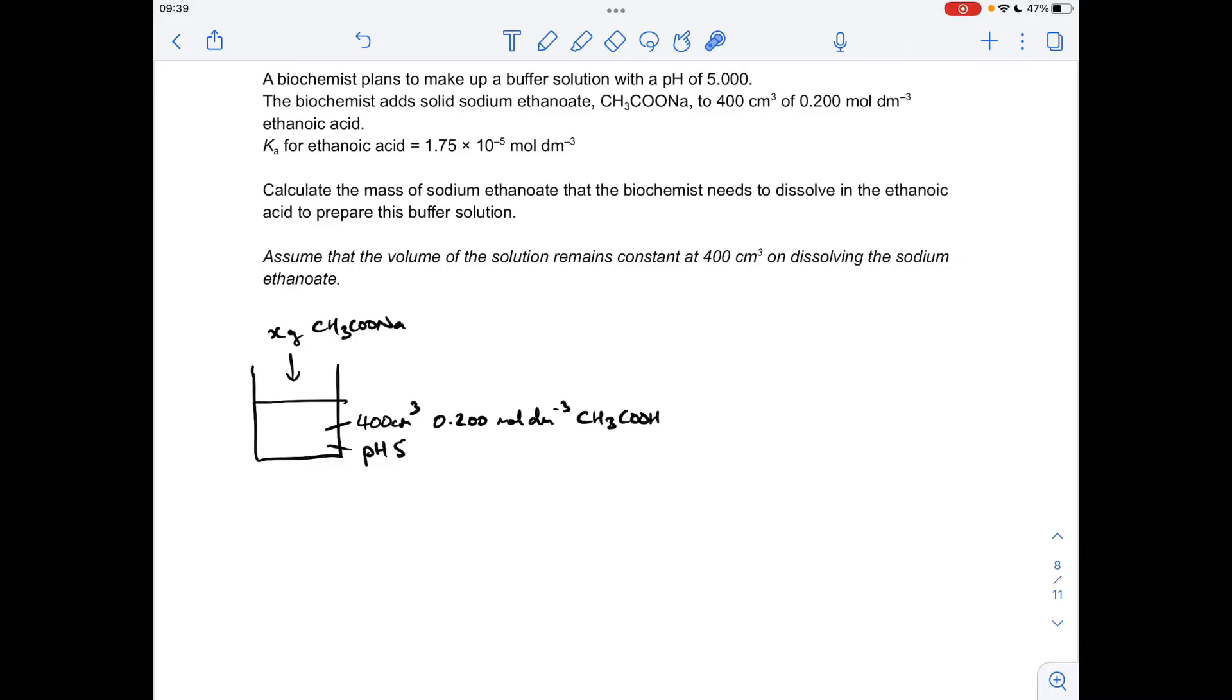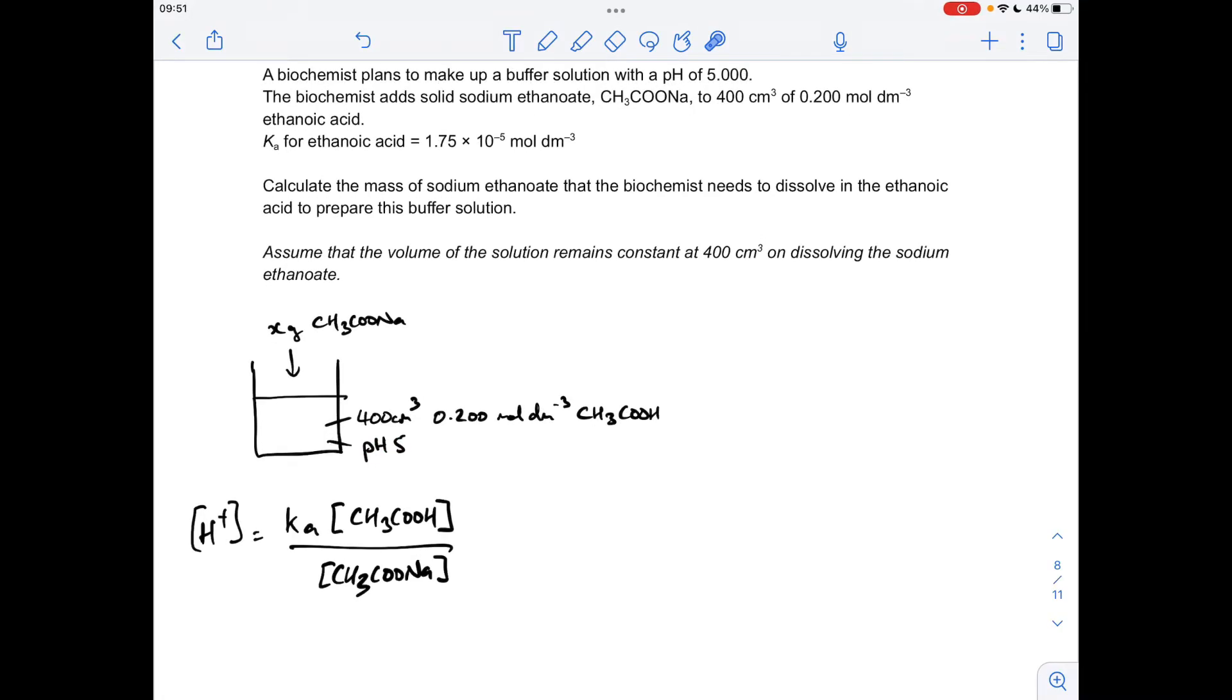So obviously we've got to calculate how many grams of sodium methanoate is needed to generate this pH of five. So as always with any buffer calculation, the first thing we start off with is the Ka over salt expression, it's what I call it anyway. So the H plus concentration of a buffer is equal to Ka multiplied by the acid concentration divided by the salt concentration.